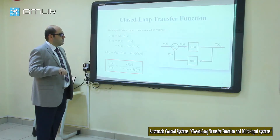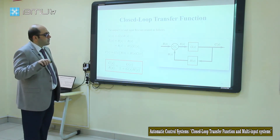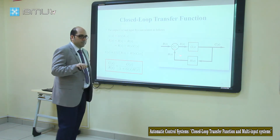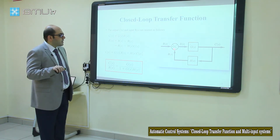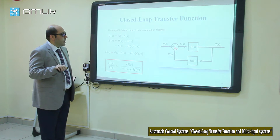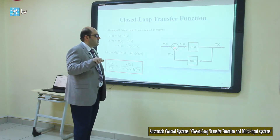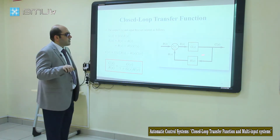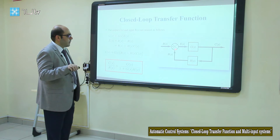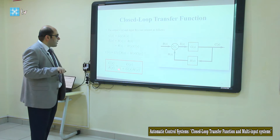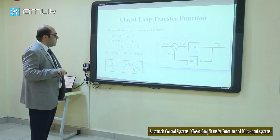This is the transfer function of a closed-loop system, which is calculated easily. Now let's talk about the feedback. As you see here, our feedback signal B(s) is a negative feedback — we write a negative sign at the summing point — so our feedback signal is a negative feedback.